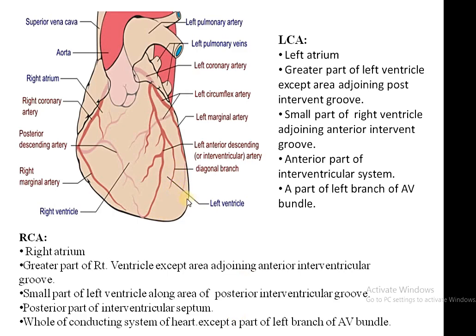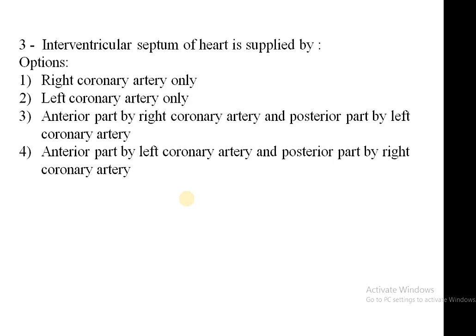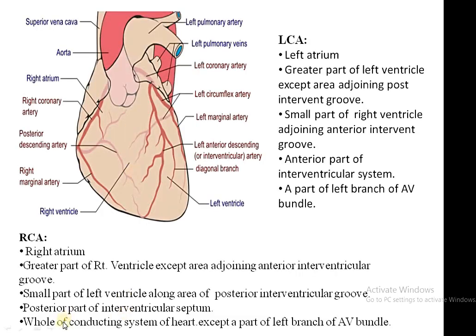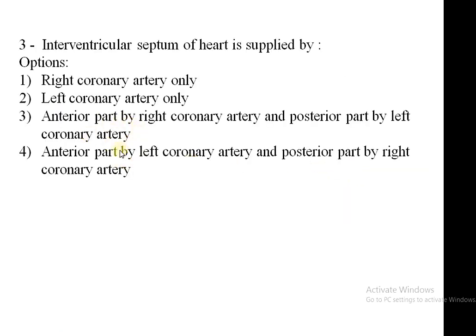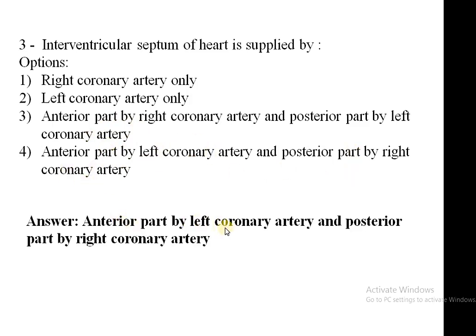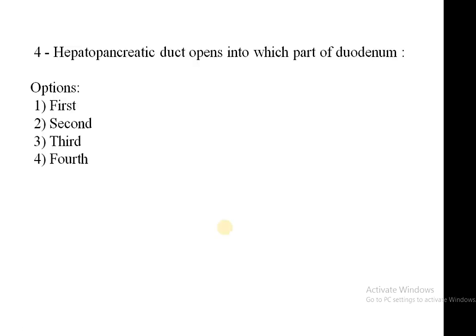So the interventricular septum is supplied by both coronary arteries: the posterior part by the right coronary artery and the anterior part by the left coronary artery. The answer is: anterior part by the left coronary artery and posterior part by the right coronary artery.